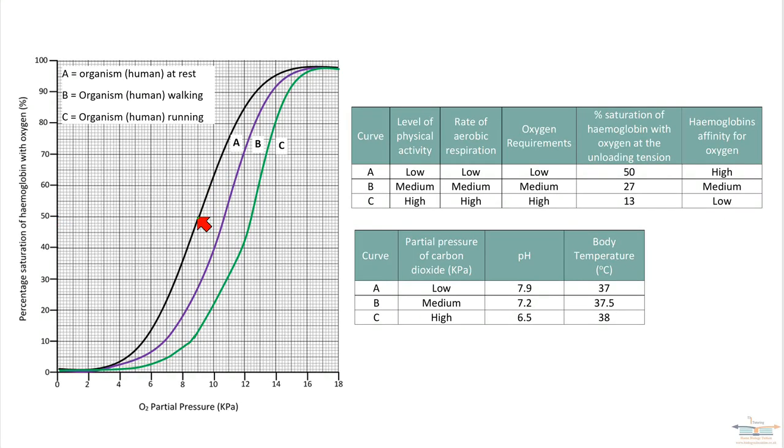The percentage saturation is 50%. If you go to curve B, it's 27%, and if you look at line C, it's 13%. That clearly shows that as someone becomes more physically active, there's less oxygen bound to hemoglobin. There's been more oxygen dissociation, and the reason for that is that the body needs the oxygen to do more respiration.